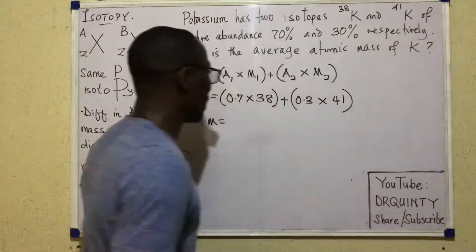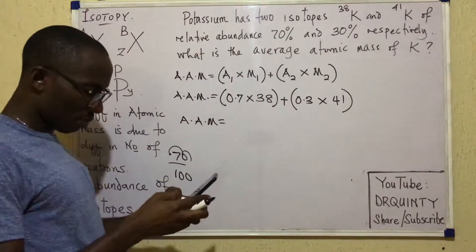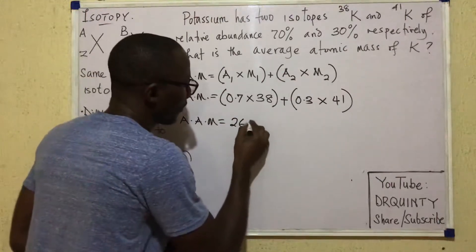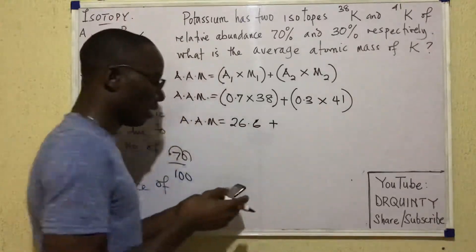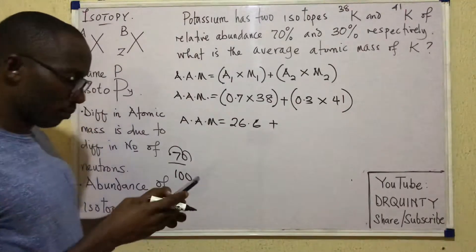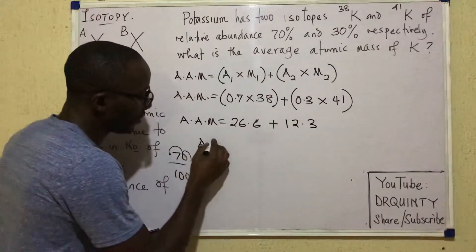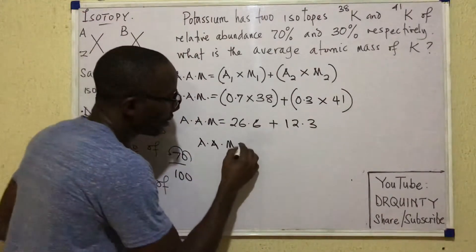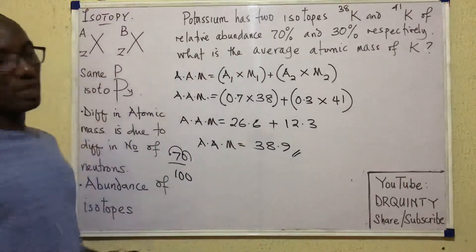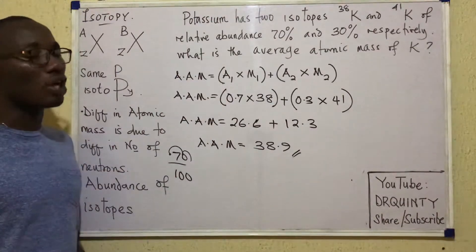I'll write 0.3. I'm sure that's easy to comprehend now. 30% times the mass of that isotope is 41. So that the average atomic mass here will be equal to... I'll grab my calculator now. 0.7 times 38 gives me 26.6. 26.6 plus 0.3 times 41 gives me 12.3. So that if I add up these values, the average atomic mass appears as 38.9. That's the average atomic mass. So 38.9 atomic mass unit is the average atomic mass of potassium.